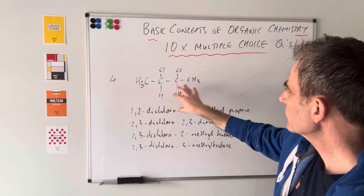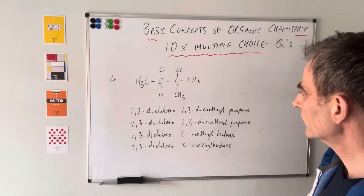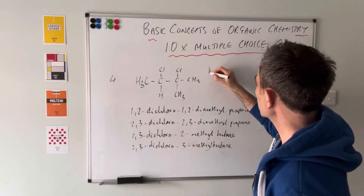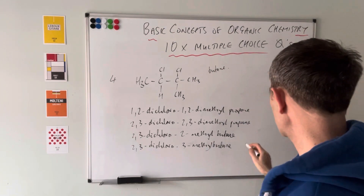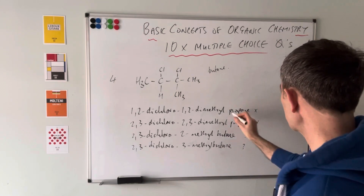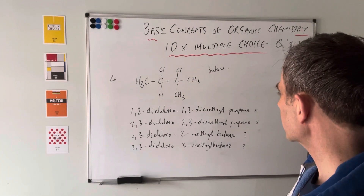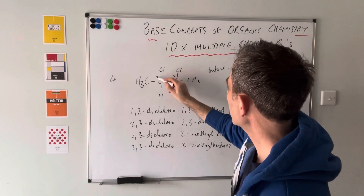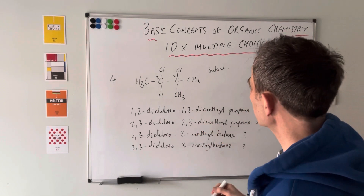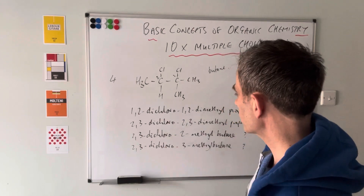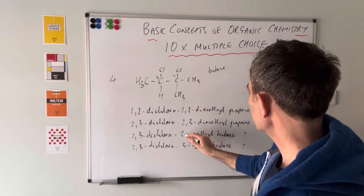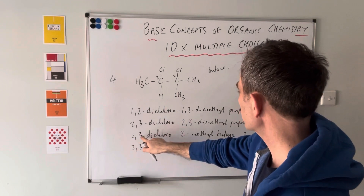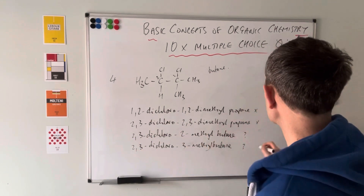Question four: we're given a halogenoalkane structure and must choose the correct name. The longest continuous chain straight down the middle is four carbons — a butane — which rules out the two options with propane. There are chlorine atoms on carbons 2 and 3, making it 2,3-dichloro. There's also a methyl branch; we assign it the lower number, carbon 2, giving the full name 2,3-dichloro-2-methylbutane.